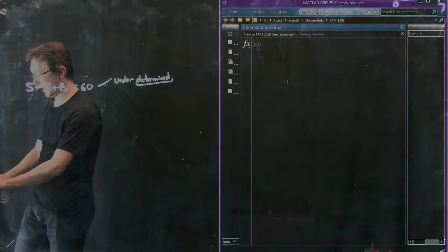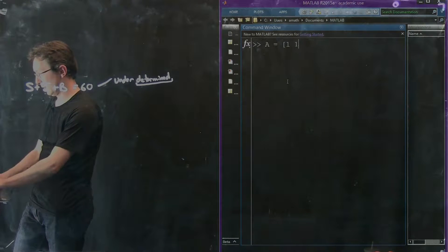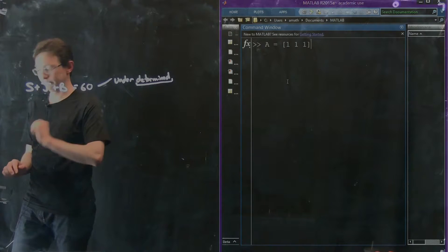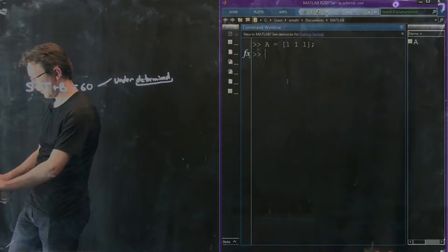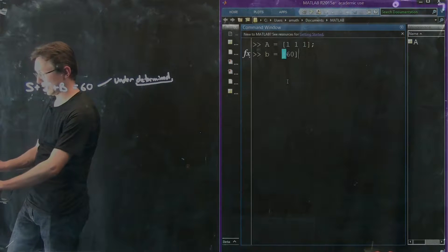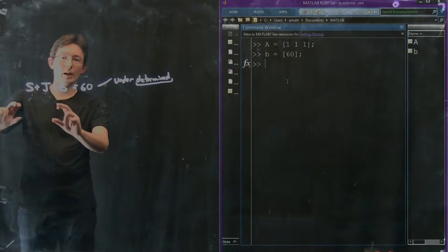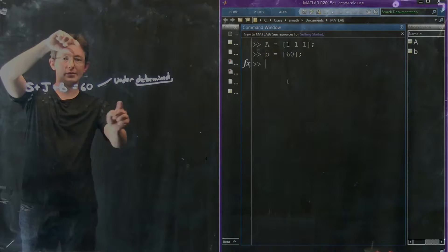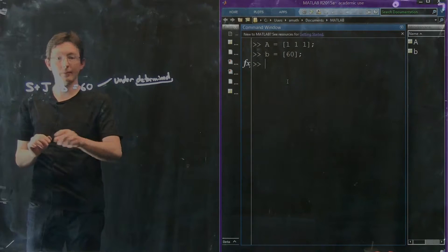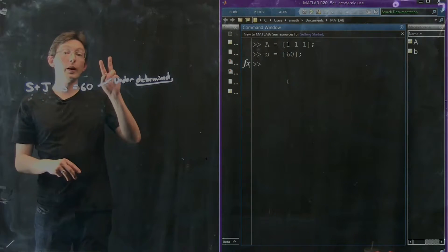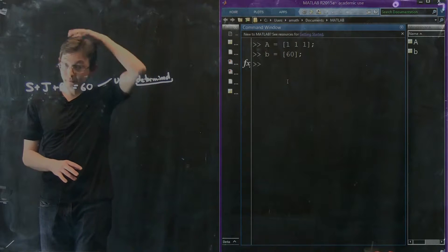Now in MATLAB, I can still try to solve this. It's kind of interesting to try. So let's say A equals 1, 1, 1. That's Sally, John, and Bob. And B is just this number 60. And I'm still going to try to solve for A times X equals B, where X is Sally, John, and Bob. And I'm going to do it two ways. I'm going to do it using backslash.